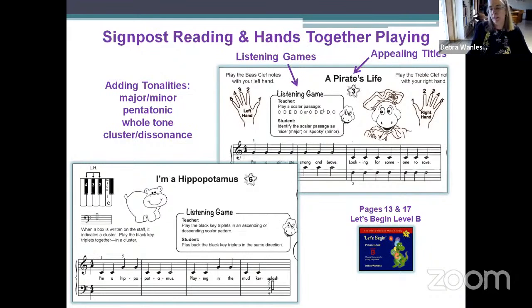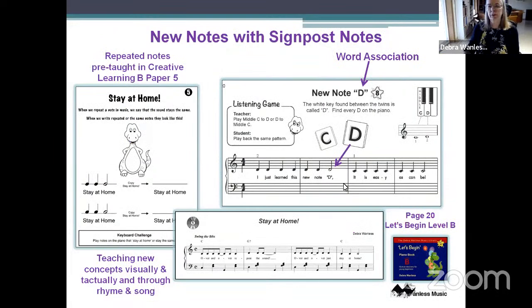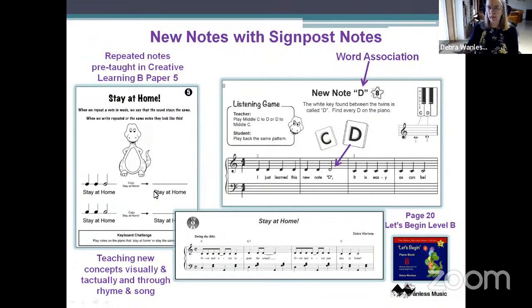We continue using the listening game to develop major and minor sounds throughout the method books. We're adding tonalities — major, minor, pentatonic, whole tone. 'I'm a Hippopotamus' brings clusters into play, getting students working with a little dissonance without it being threatening. Animals grab children's attention very quickly. We introduce D using middle C as a signpost, with word association in the lyrics so they internalize sound — the D letter appears in the words.